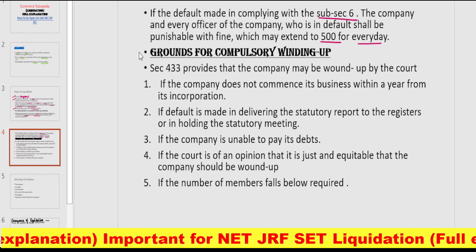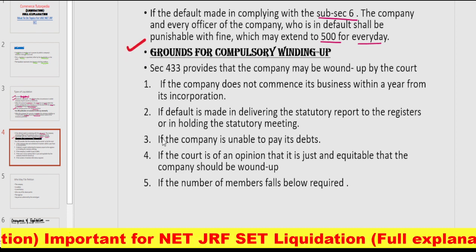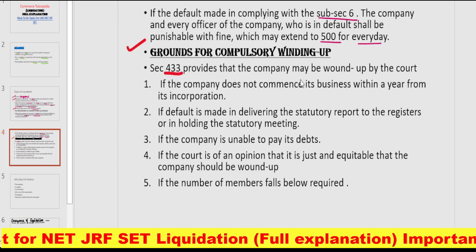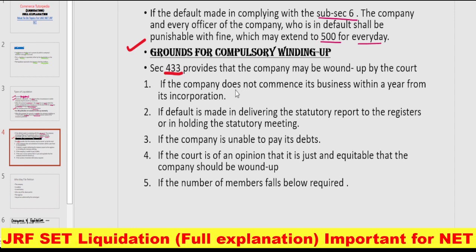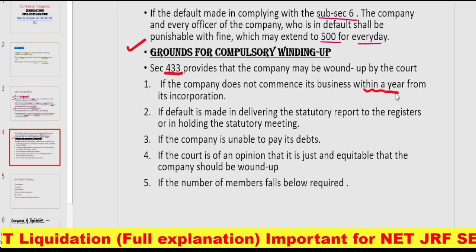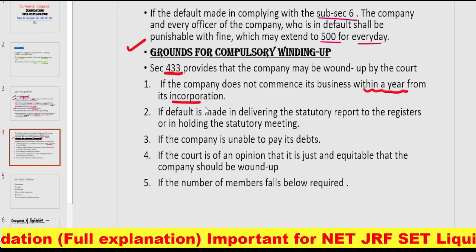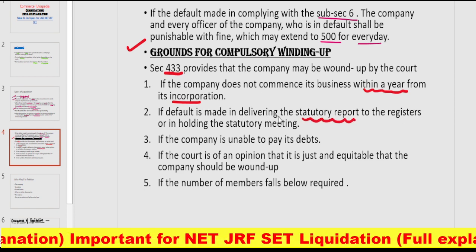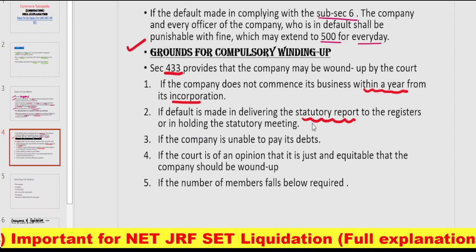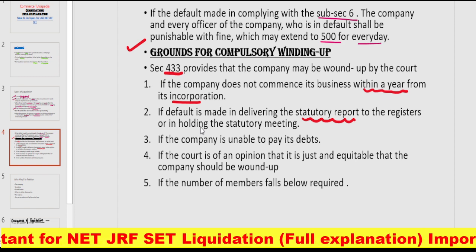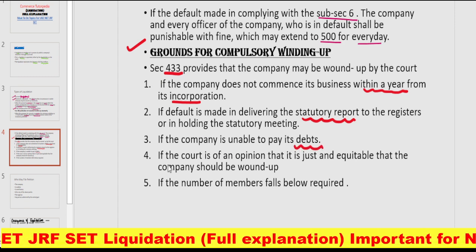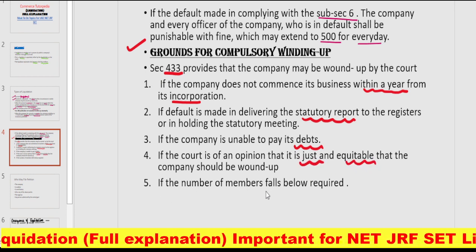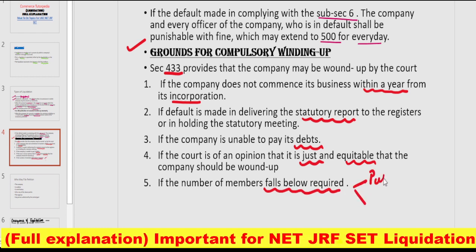Ab grounds kya-kya hain compulsory winding up ke liye — Section 433 provide karta hai. Pehla: if the company does not commence business within a year of incorporation. Doosra: if there is default in delivering the statutory report to the registrar or in holding the statutory meeting. Teesra: if the company is unable to pay its debts. Chauthaa: if the court is of the opinion that it is just and equitable. Paanchwa: if the number of members falls below the required minimum.